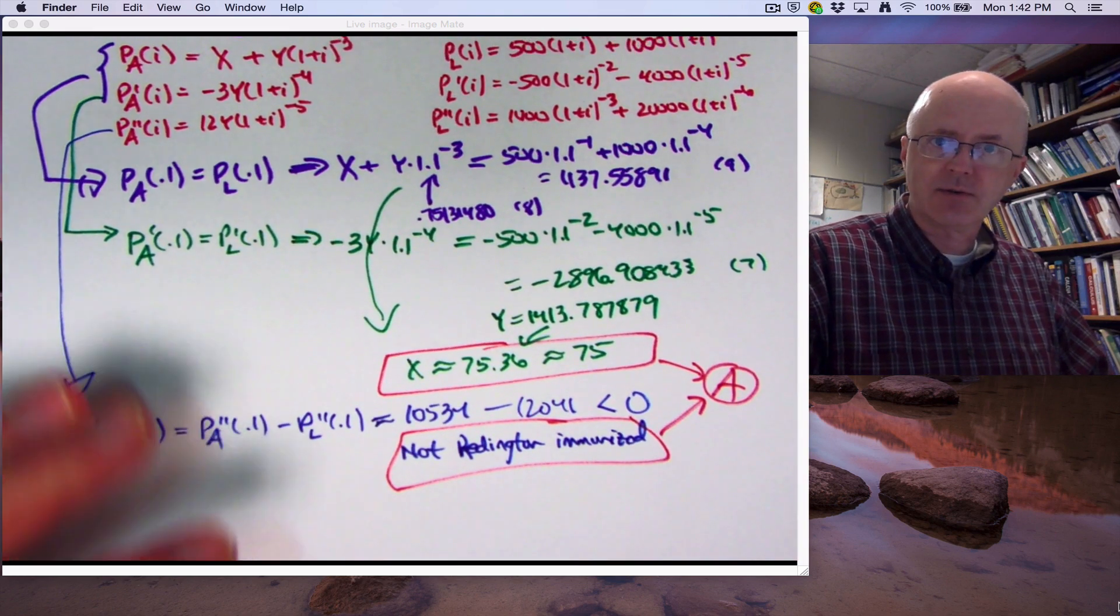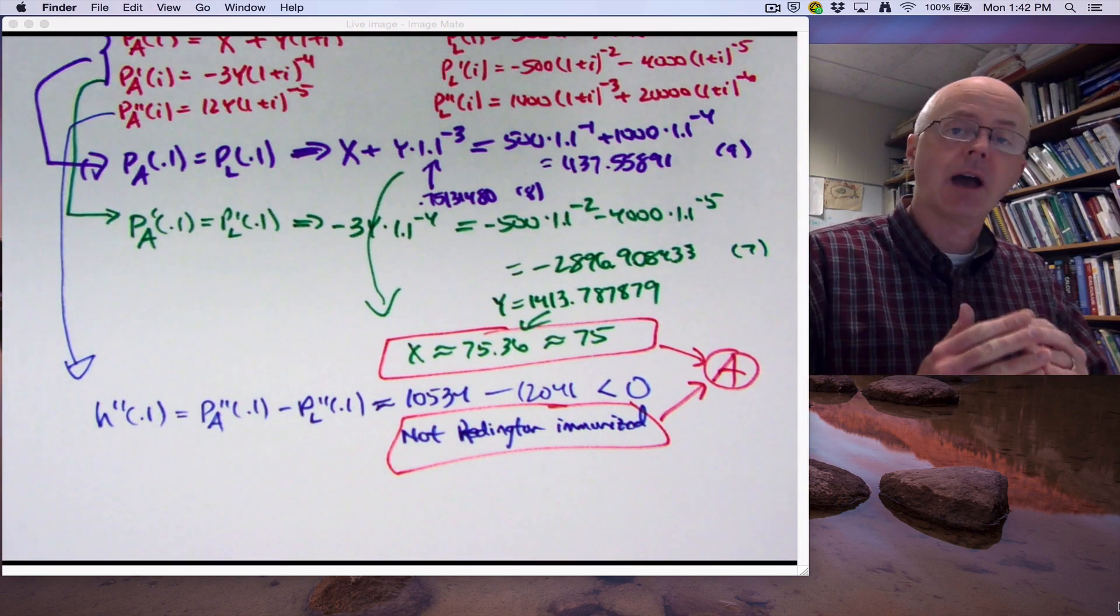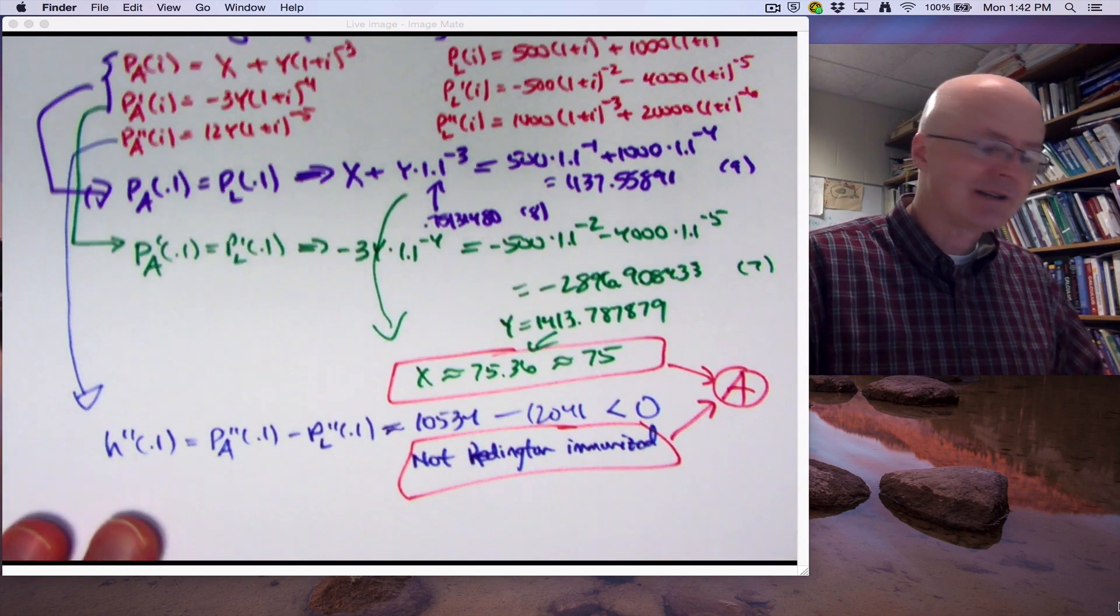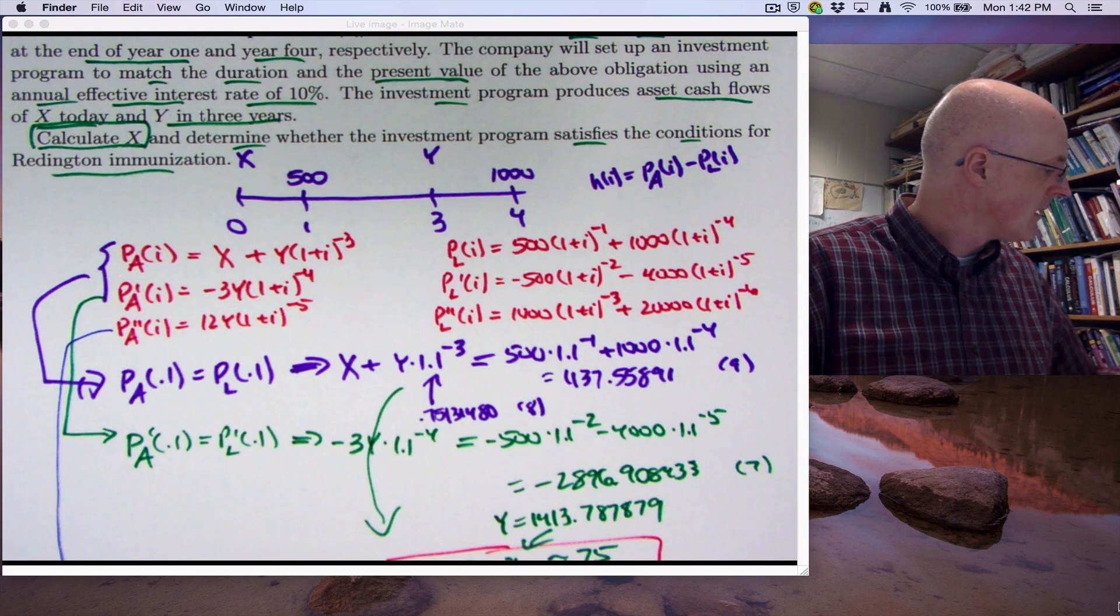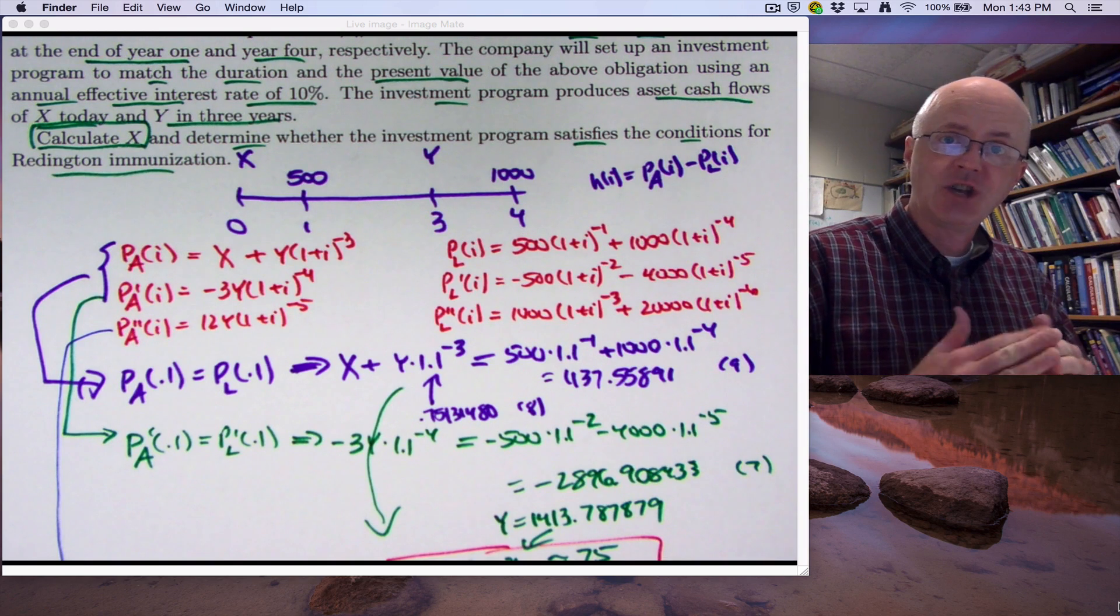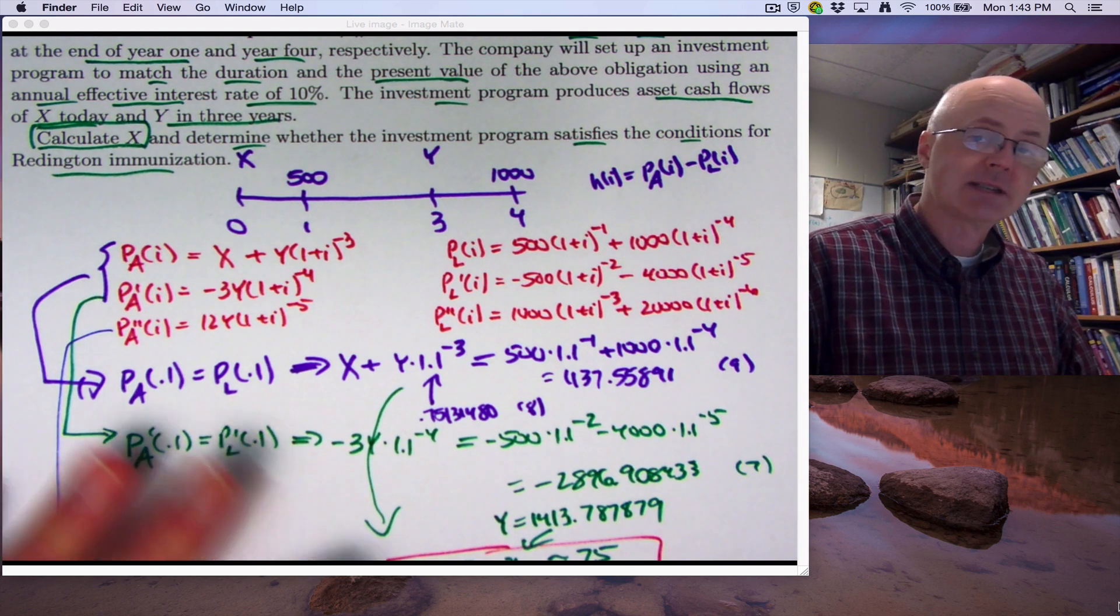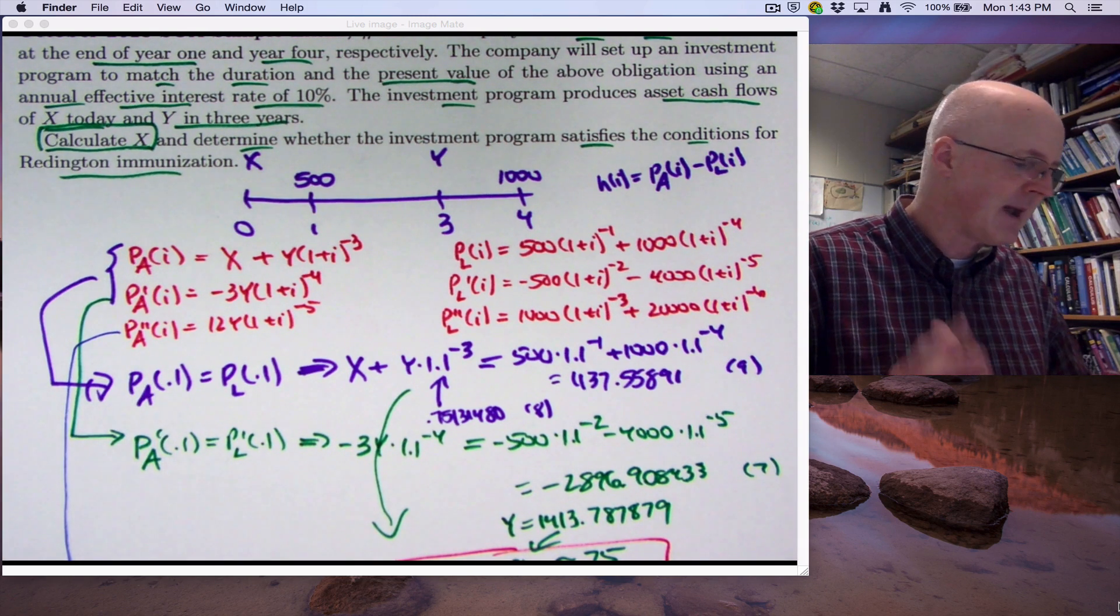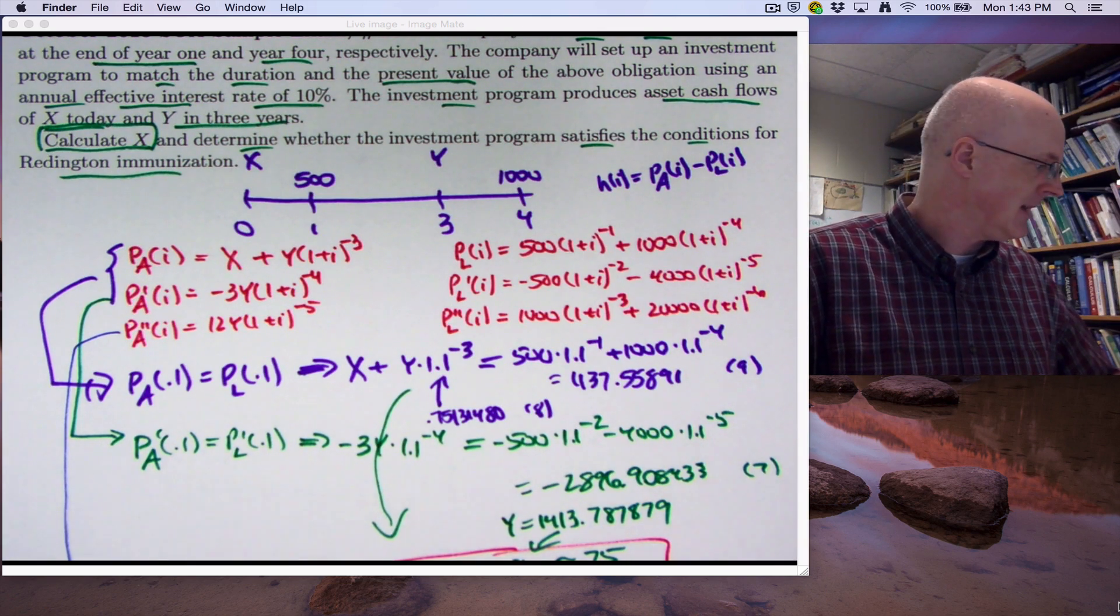Reddington immunization means you've got a local minimum for h of i at i equals 0.1 in this case. The second derivative test would say you've got a local minimum. The second derivative being negative actually means you've got a concave down graph. So you have a local maximum for h of i at i equals 0.1. You're not Reddington immunized. This function is going to be negative in value when i is close to 0.1, which in a sense is bad, okay? Because it says if i changes a little bit away from 0.1, you're in a deficit position of your assets with respect to your liabilities. They're not going to cover your liabilities.